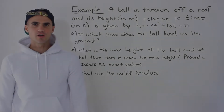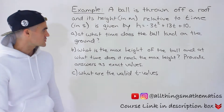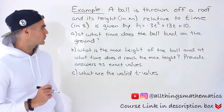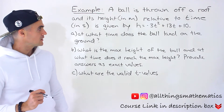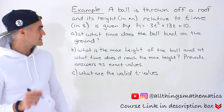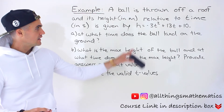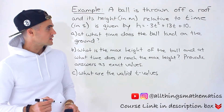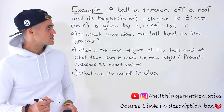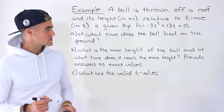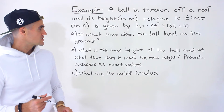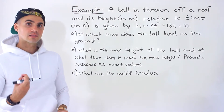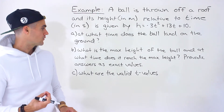Welcome back everyone. Moving on to the next word problem dealing with quadratics. A ball is thrown off a roof and its height in meters relative to time in seconds is given by this equation: H equals negative 3t squared plus 13t plus 10. Given that, we have to find at what time does the ball land on the ground.